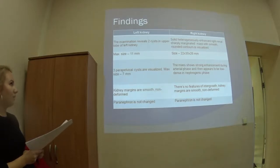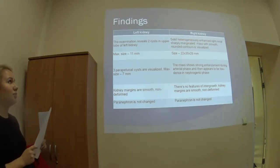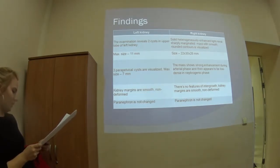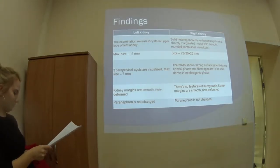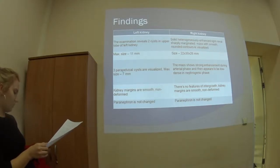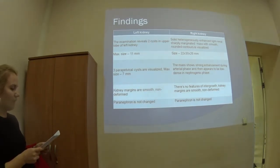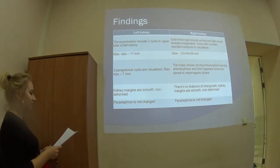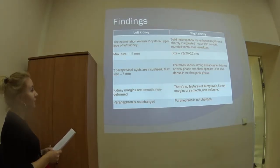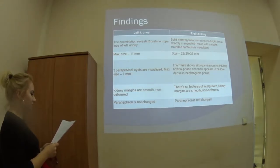Here's what was found. The right kidney was located slightly lower than usual, and a solid, heterogeneously enhanced, sharply marginating mass with smooth rounded contours was identified. The mass shows strong enhancement during the arterial phase and then appears low-density during the nephrogenic phase. There are no features of capsular extension, kidney margins are smooth and non-deformed, and the paranephric fat is not changed. The left kidney is typically located with smooth, non-deformed margins, normal-sized kidney pelvis, no compromise, and the examination revealed two cysts in the upper pole and three paranephric cysts in the lower pole.